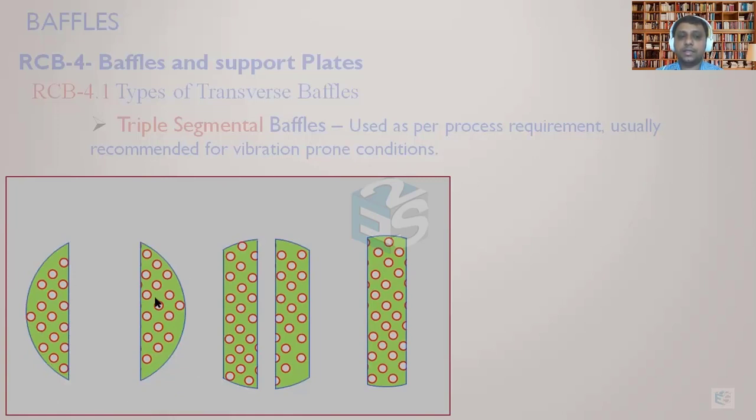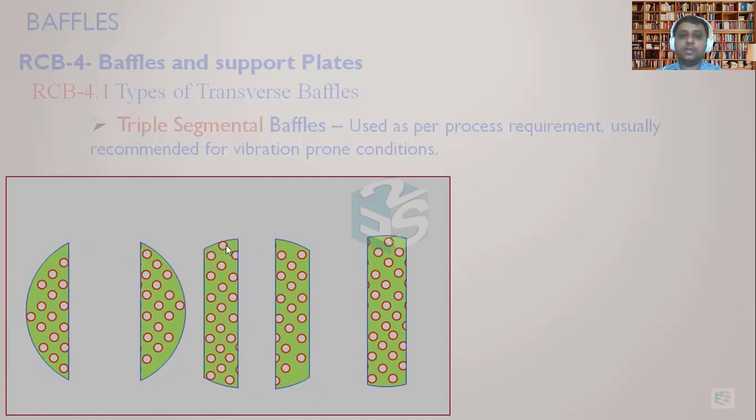The single circle has been now divided into three different segments. One is this, second is this and third is this. And accordingly you can see the overlap.